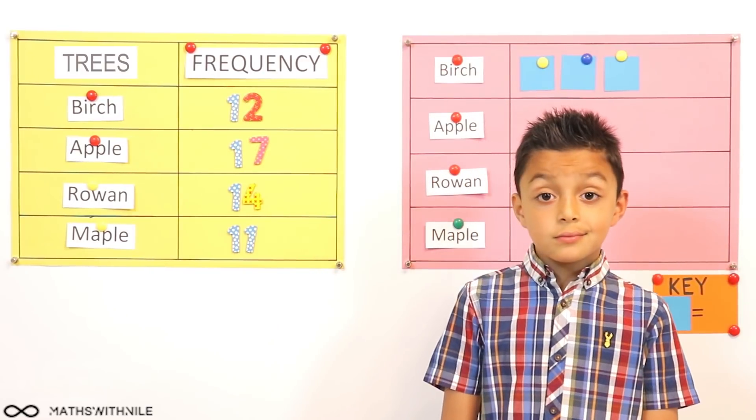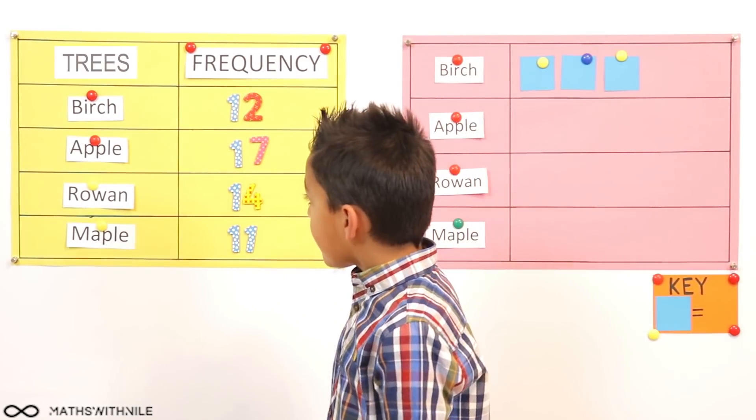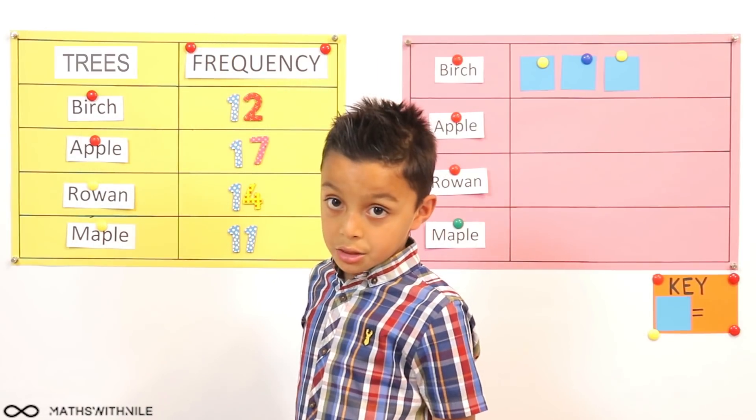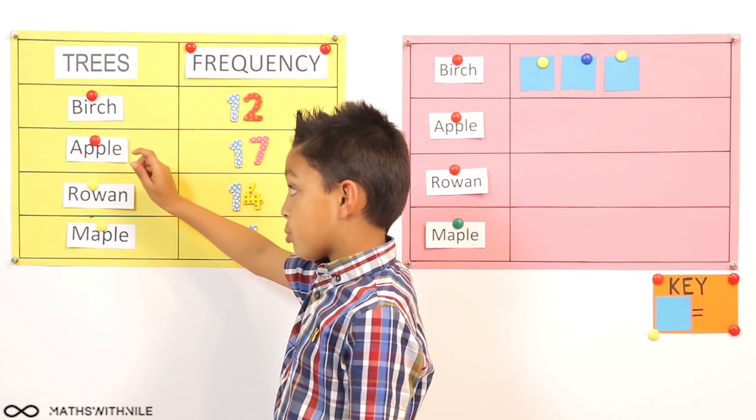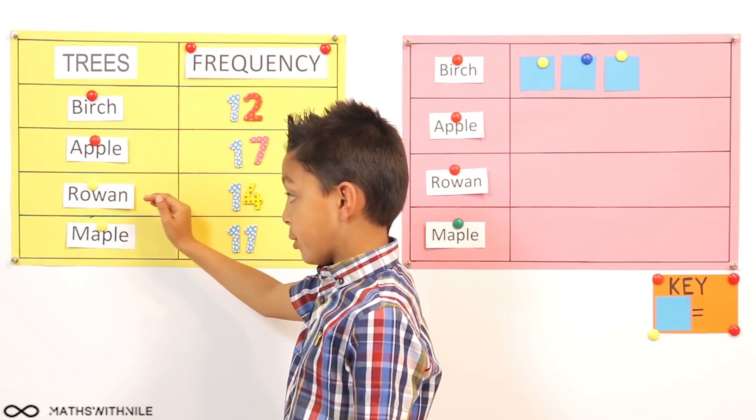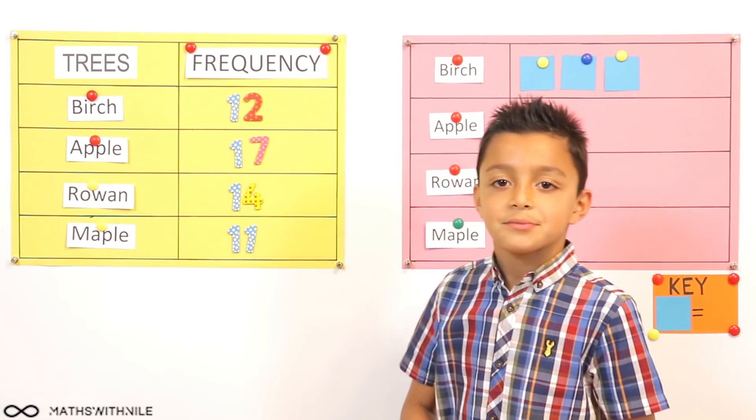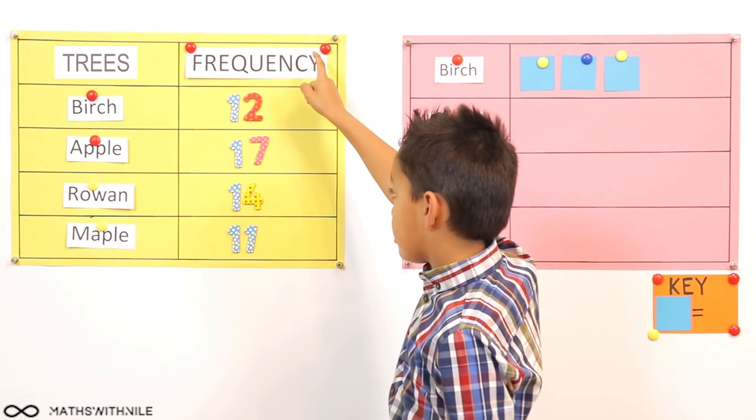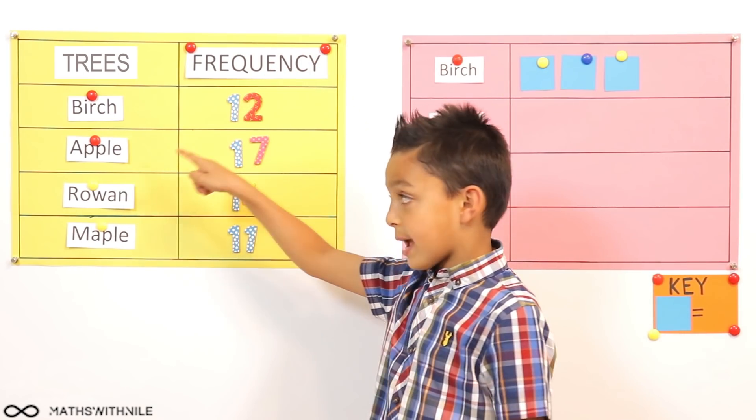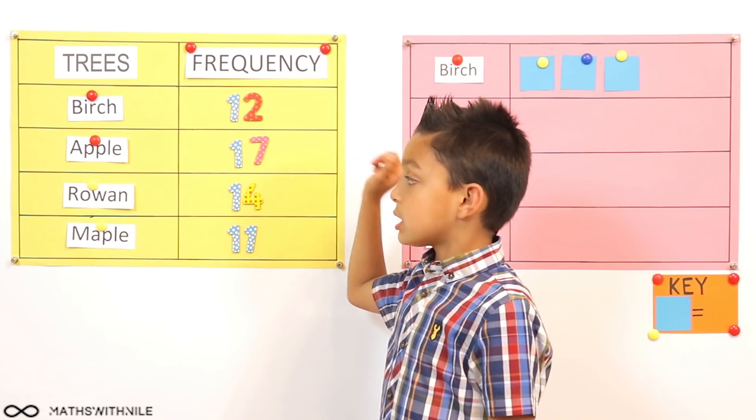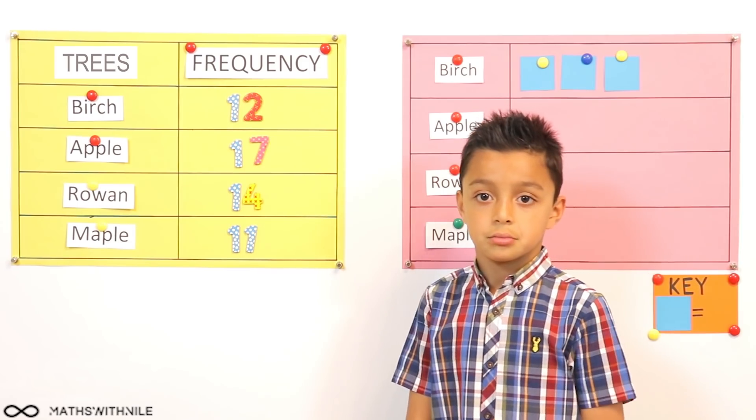Okay, Niall, let's look at our last question. What information does our table give us? It gives us different trees. Yes. The trees are birch trees, we have apple trees, we have rowan trees, and you can't forget maple trees. Okay, and what about the second column? Frequency. Twelve birch trees, seventeen apple trees, fourteen rowan trees, and eleven maple trees. Very good.